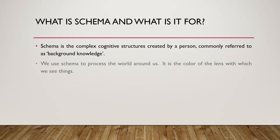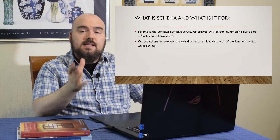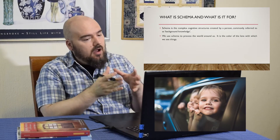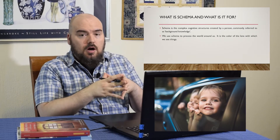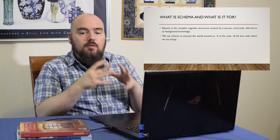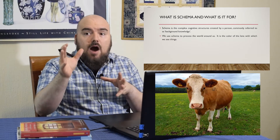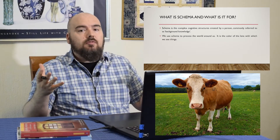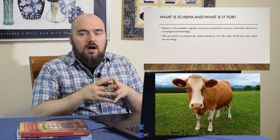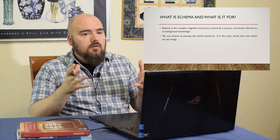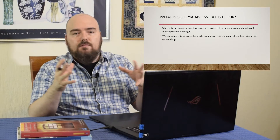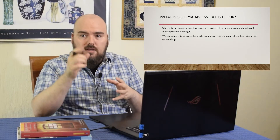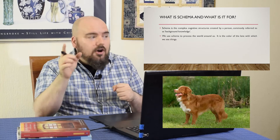Schema is really what we use to process the world around us — it is the color of the lens with which we see things. A good story to exemplify this is the story of a child driving down the road in a car with his parents. For the first time ever, he looks out the window and sees a cow. He'd never seen a cow before in his life. This is a child of about three, four, or five years old, and he looks at the cow and says, 'Mommy, look, a dog.'